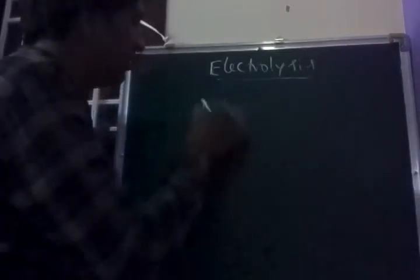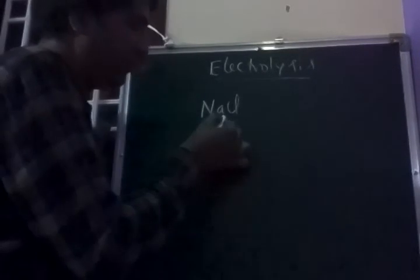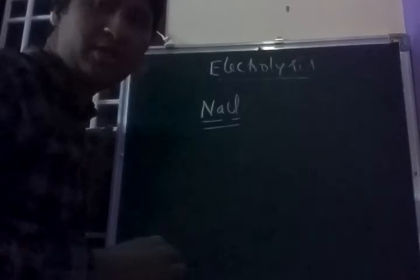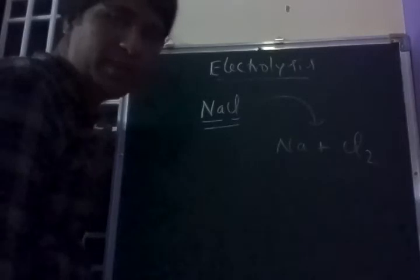The topic is electrolysis. The process of decomposition of electrolyte into constituent elements is called electrolysis. For example, NaCl conducts electricity by the movement of Na⁺ and Cl⁻ ions, so it is known as an electrolyte. It is decomposed into elements — Na and Chlorine (Cl₂) — by passing EMF. This process is called electrolysis.